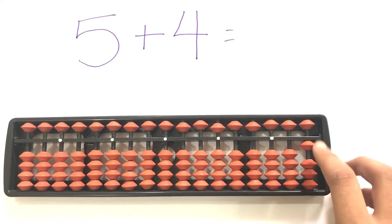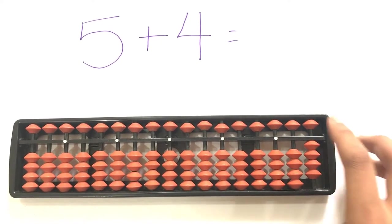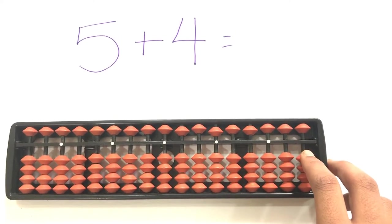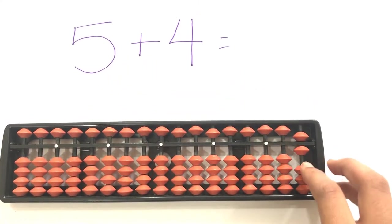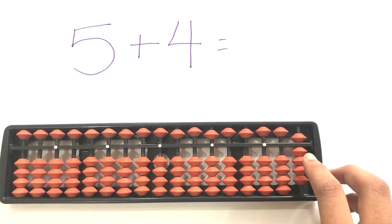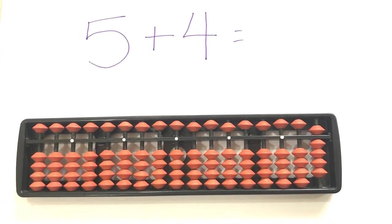Five. One, two, three, four. The upper bead is five value. Minus four plus five equals five plus four. One, two, three, four, five, six, seven, eight, nine. Five plus four is nine.